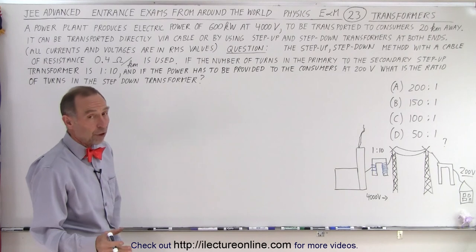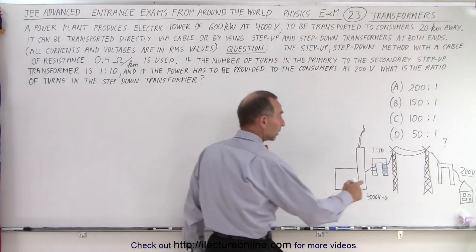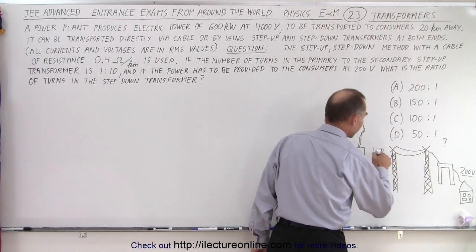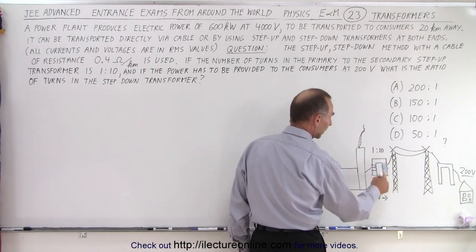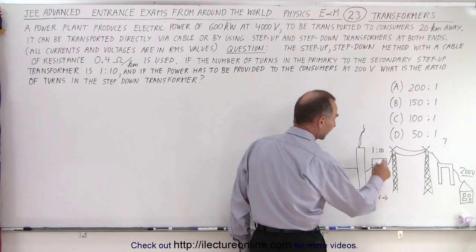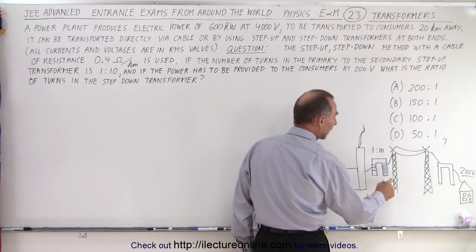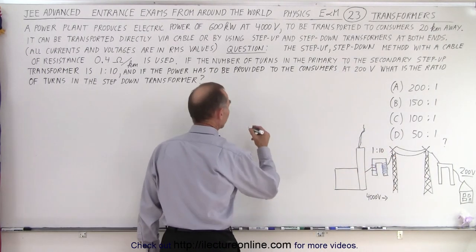Alright, so first of all what we need to do is figure out what will be the voltage on the lines if we use a 1 to 10 step-up. Now what that means is we will multiply the 4000 volts going into the transformer times 10 to 1, and that will be the voltage coming out of the transformer.